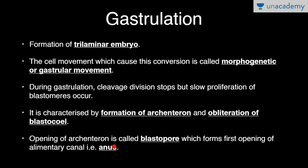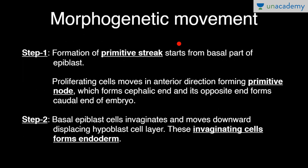The opening of the archenteron is called the blastopore, which forms the first opening of the alimentary canal, that is the anus. Humans are deuterostomes — their first opening is the anus, formed by the blastopore. Morphogenetic movement causes the differentiation of cells.